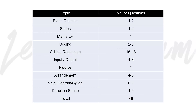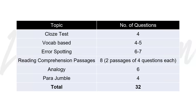अगर हम LR की बात करें तो: blood relation 1-2 questions, series 1-2, maps 1, coding 2-3, critical reasoning 8, total 16 to 18 questions आ रहे हैं। So it is confirmed that 8 critical reasoning questions are coming. Total data interpretation: 40.